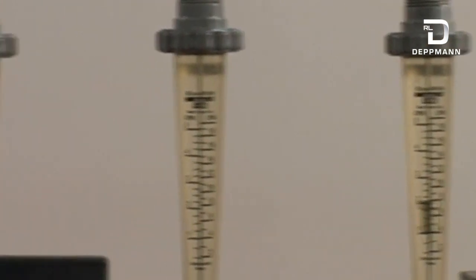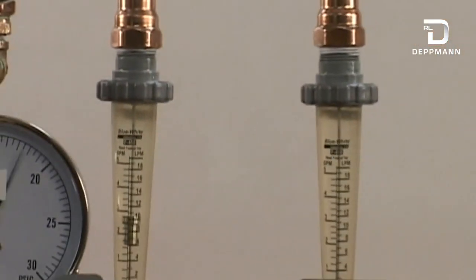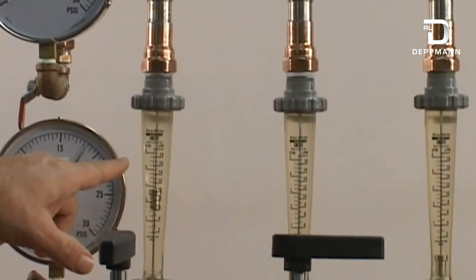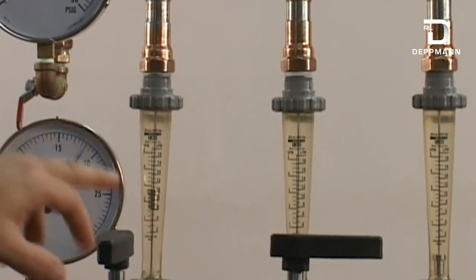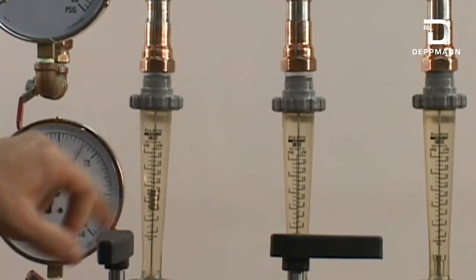Here, our pressure independent control valve is set for 3 GPM. So no matter what else goes on in the system, this is only going to allow 3 GPM through this zone.